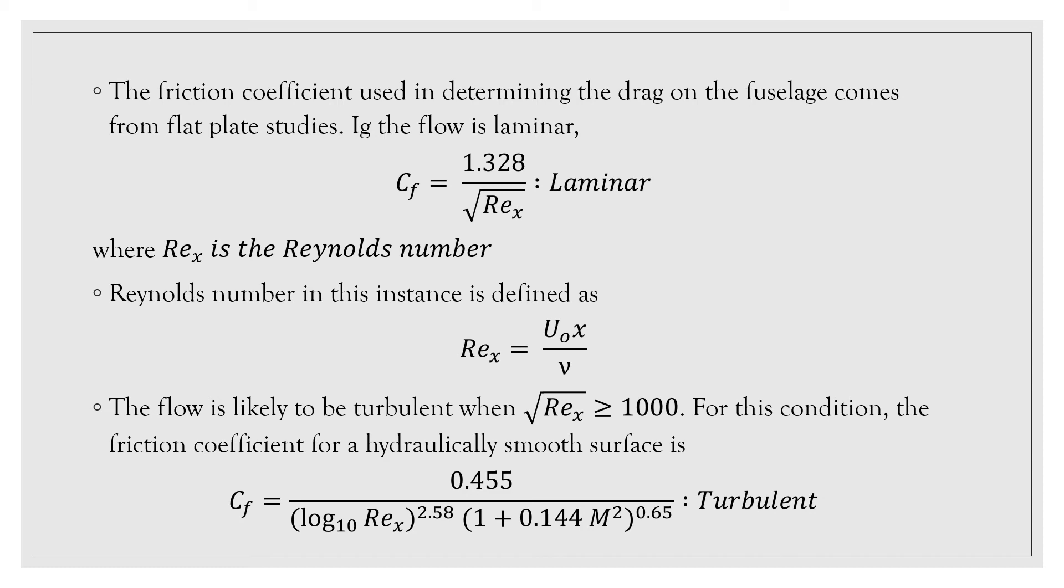If the Reynolds number is less than 1000, the flow is presumed to be laminar and the CF coefficient of friction is represented as mentioned above. Otherwise, the flow will be presumed to be turbulent and the turbulent formula for coefficient of friction will be used. The drag corresponding to each segment is calculated based on the local surface area and friction coefficient. These are then summed up to obtain the total viscous drag.